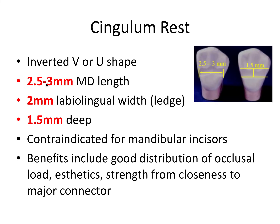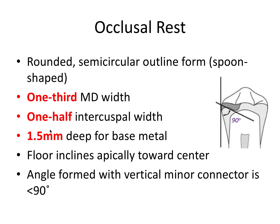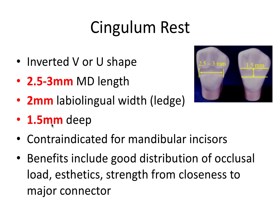Instead of one-third the mesiodistal length, we're looking at 2.5 to 3 millimeters mesiodistal length, which is much of the tooth length. Also about 2 millimeters labiolingual width — this is to provide an adequate ledge for the rest to have enough thickness, so the metal can rest on that part of the tooth. And again, we want it to be about 1.5 millimeters deep in the vertical dimension for that metal thickness. Notice that 1.5 millimeter measurement is consistent across rests, and we'll see that in the next rest as well.